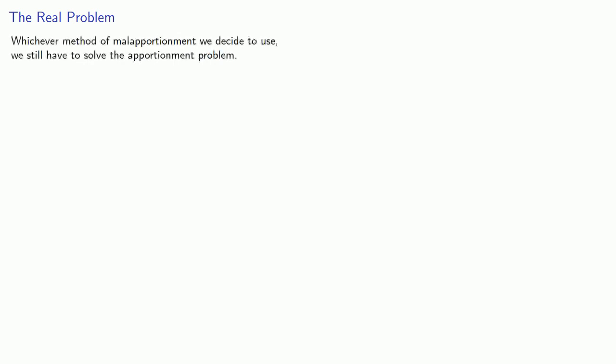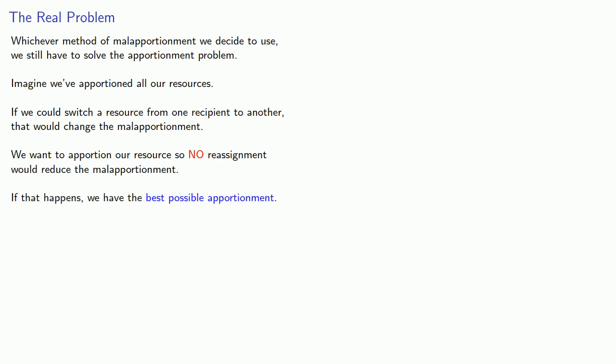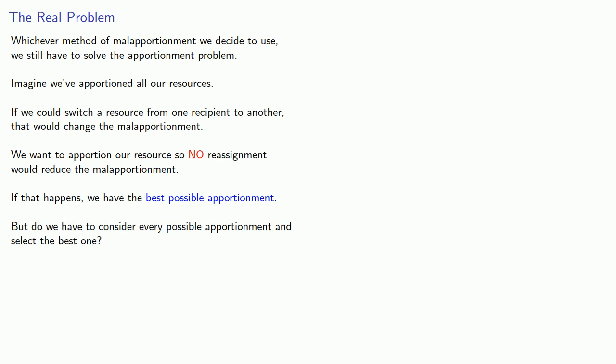What mathematics can do is address the real problem. Whichever method of malapportionment we decide to use — whether relative or absolute — we still have to solve the apportionment problem. Imagine we've apportioned all of our resources. If we could switch a resource from one recipient to another, that would change the malapportionment. So we want to apportion our resources so no reassignment would reduce the malapportionment, and if that happens we have the best possible apportionment. Do we have to consider every possible apportionment and select the best one? Fortunately, we don't — and we'll take a look at that next.